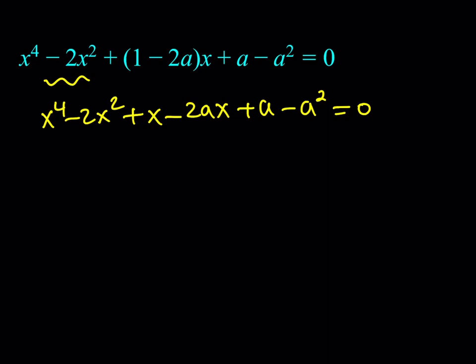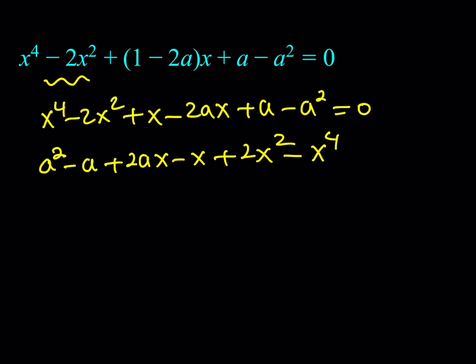We're going to do it differently. We're going to arrange this equation as a quadratic — and that's possible if you focus on a instead of x. I'd like to put everything on the right-hand side where a squared is positive. So it's going to be: a squared minus a plus 2ax minus x plus 2x squared minus x to the fourth, equal to zero. Basically, I negate everything.